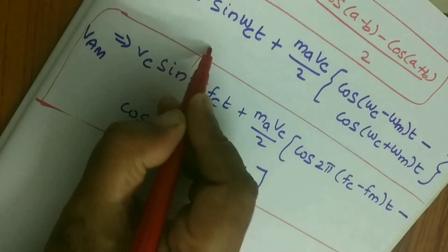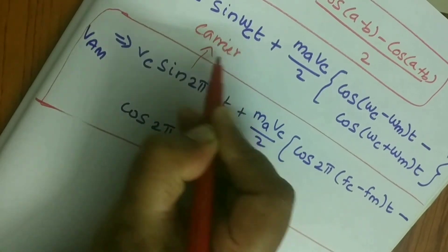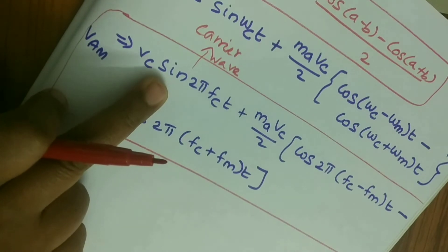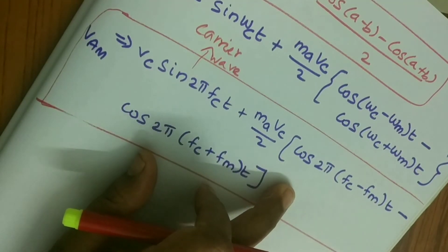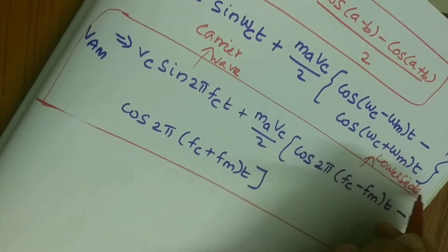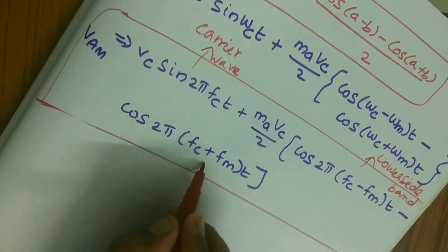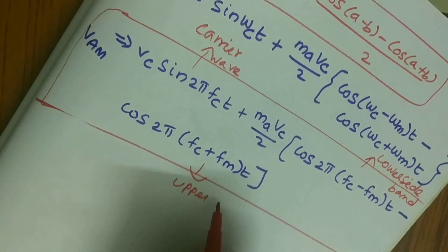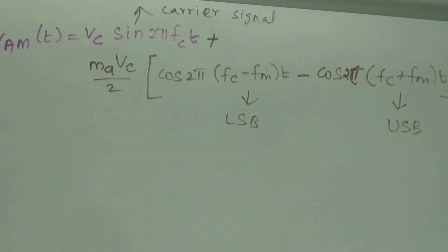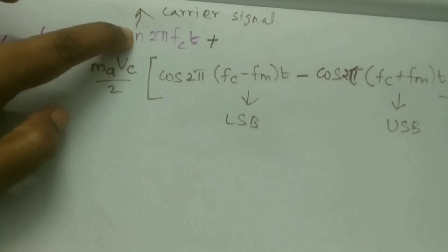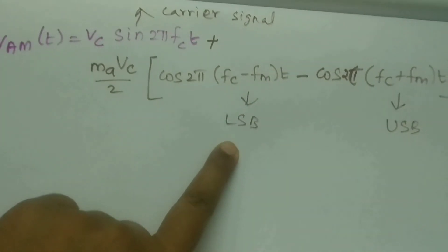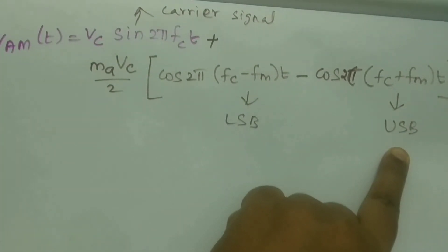By seeing this expression, we have three frequency components. The first term, Vc sine(2 pi Fc T), represents the carrier wave. The second term, Fc minus Fm, represents the lower sideband. The third term, Fc plus Fm, represents the upper sideband.